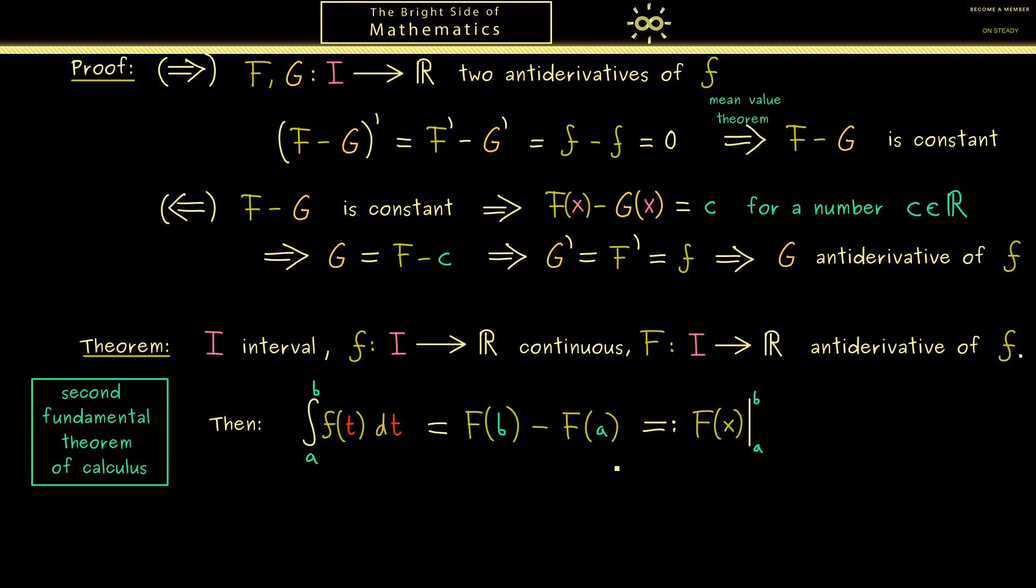Now in summary you should see this is such a nice result because it tells us that we don't need the approximation with step functions anymore to calculate an integral. If you know an antiderivative of f, you can immediately use it to calculate an integral. Therefore, maybe before we do the proof, let's look at an example and see how this works.